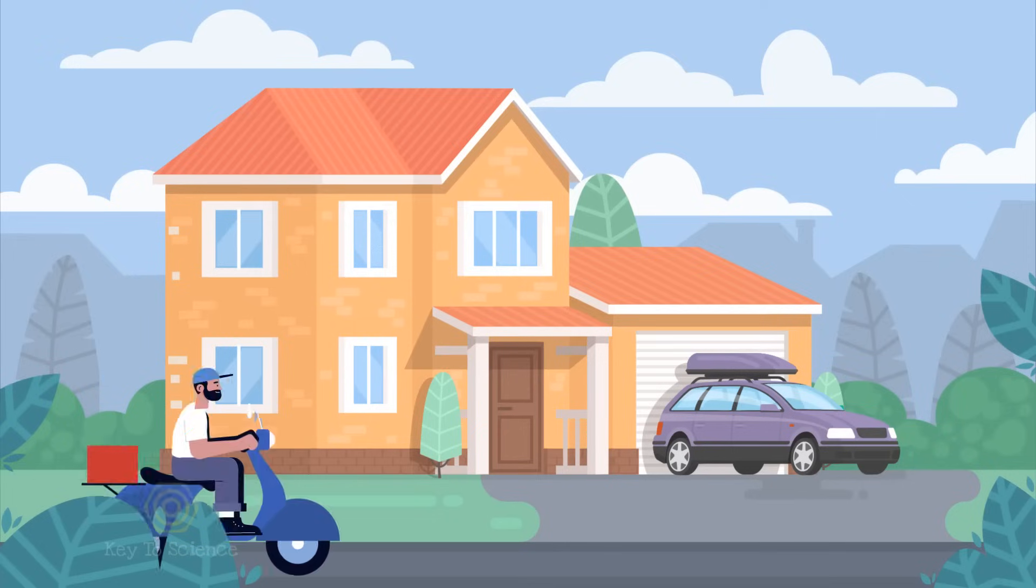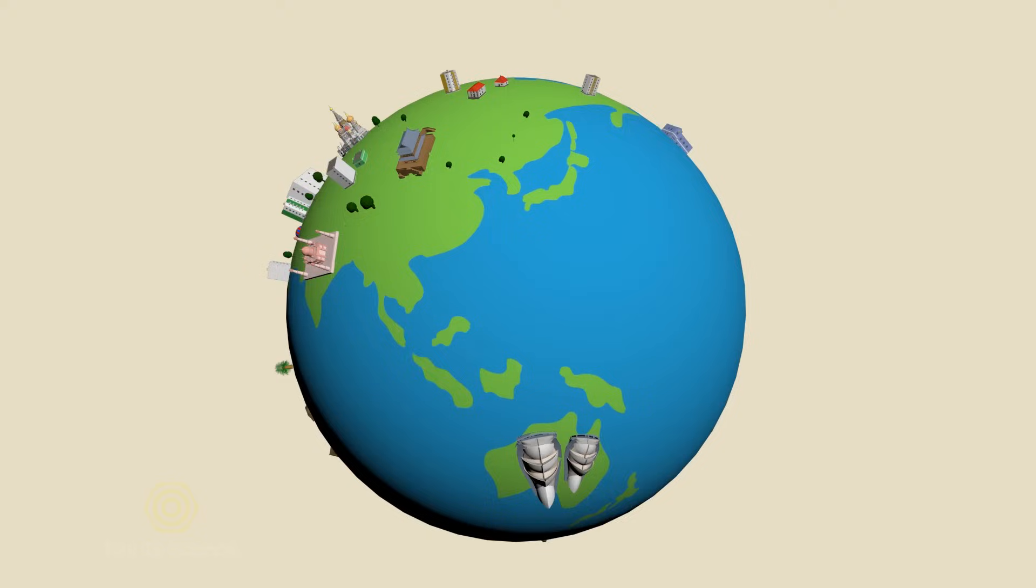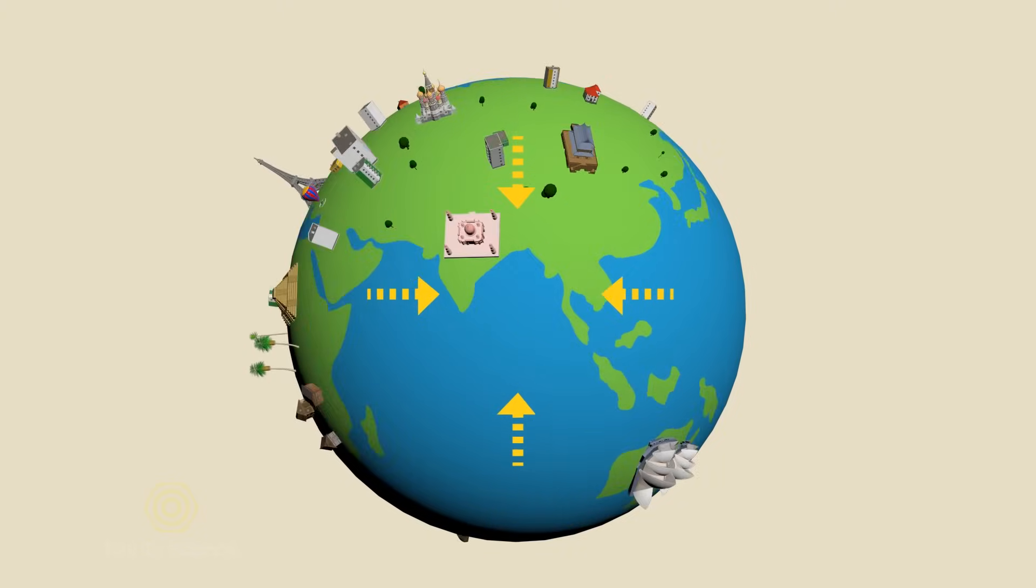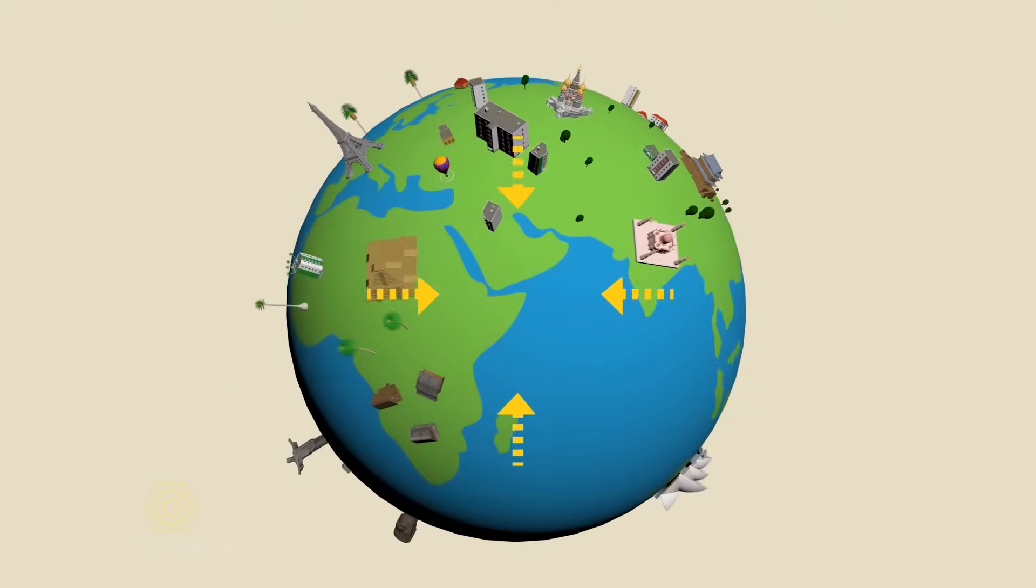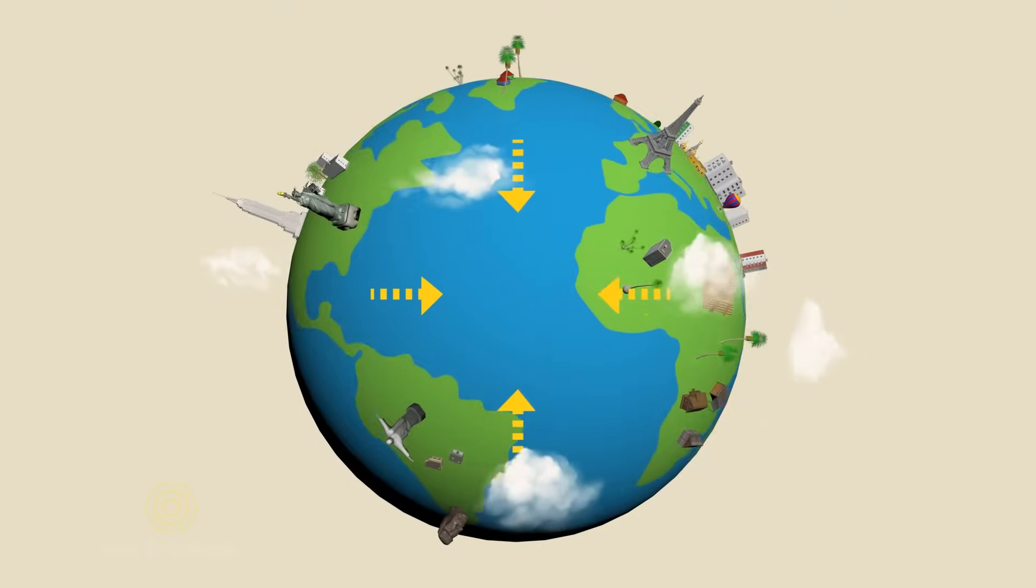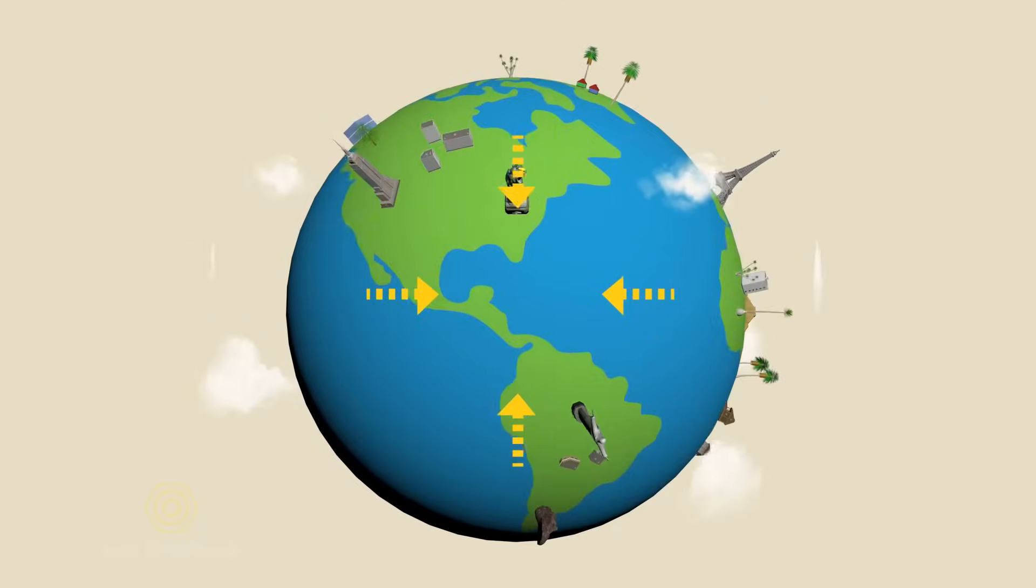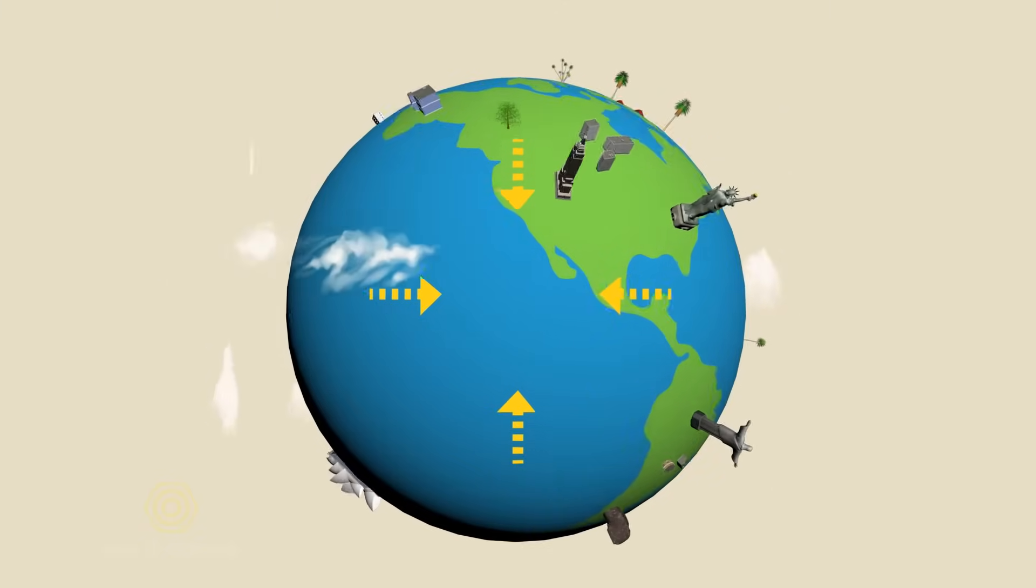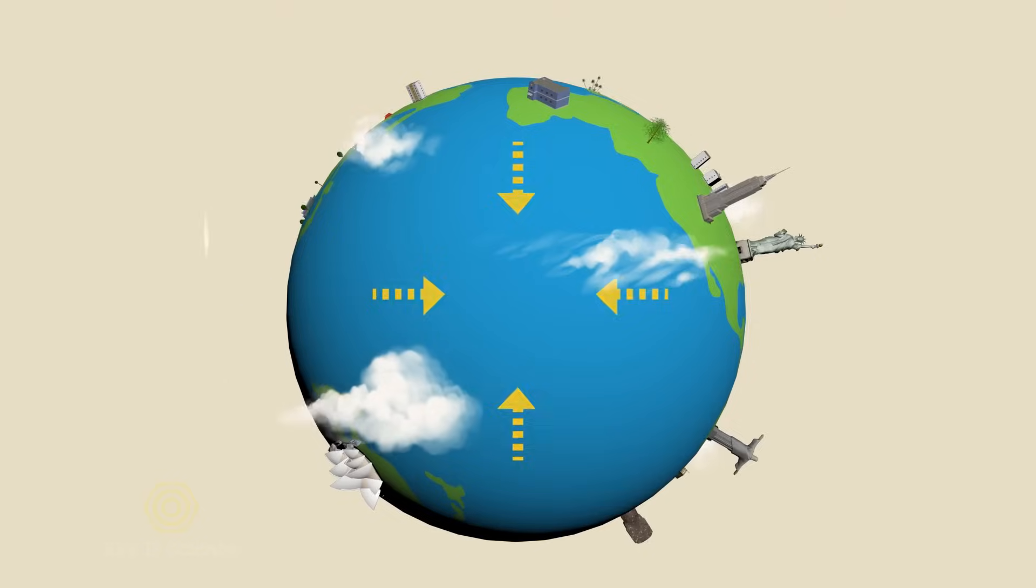The reason behind it is inertia. Earth pulls us to its center and therefore we are attached to it. Even the atmosphere is attached to it in a way due to gravitation. Therefore, all the objects on Earth or close to Earth are rotating with the same velocity as the Earth.